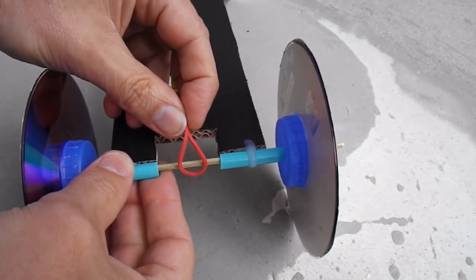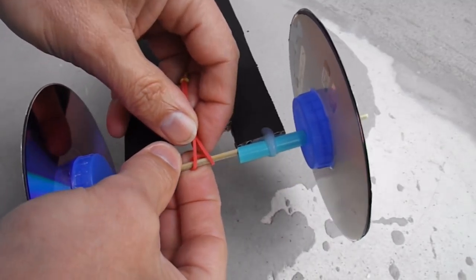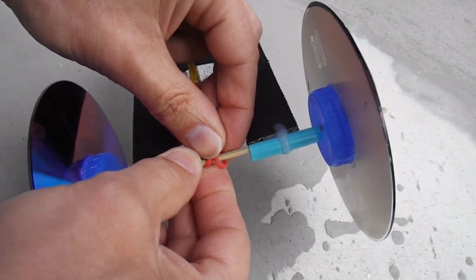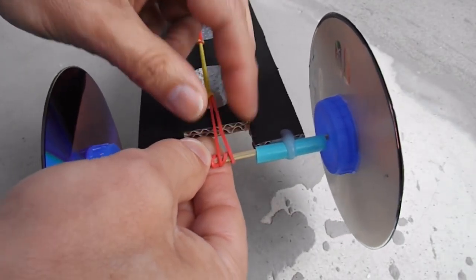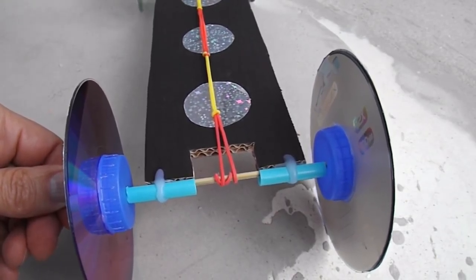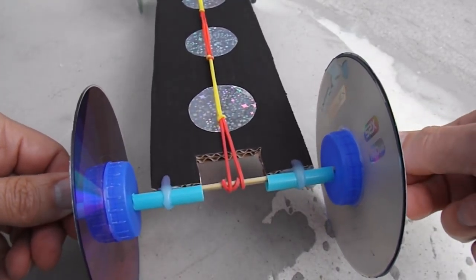You take the rubber band, you wrap it round the axle until it wraps over itself. As soon as it's over itself, it holds itself in place.